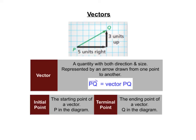Now let's talk about vectors. A vector is a quantity with both direction and size. Direction is going to tell you how many you're moving left or right and how many you're moving up or down. The size is going to tell you how many units you're going to move.